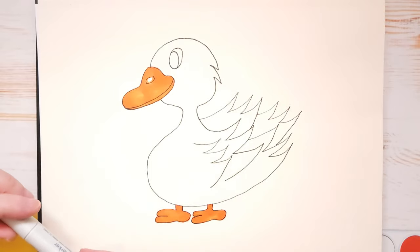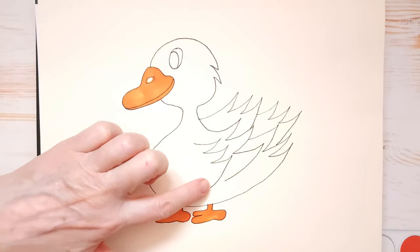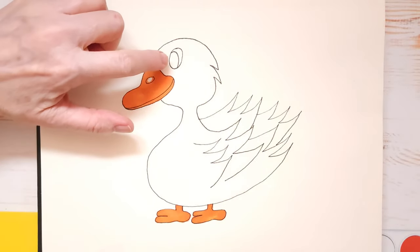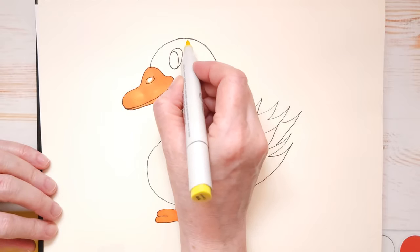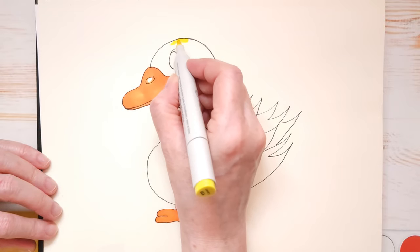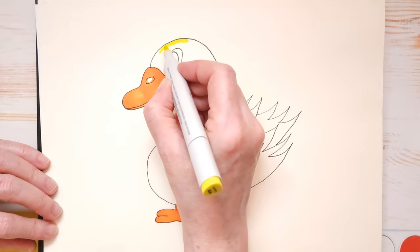So I'm all done with my orange. I'm going to take my yellow marker and the rest of the baby goose is yellow except the eye. So try not to get any yellow into his eye and we'll just color him in yellow.